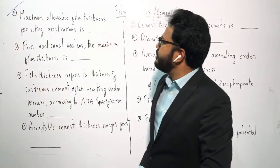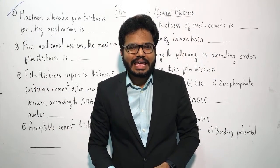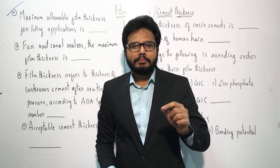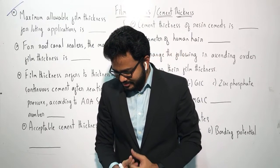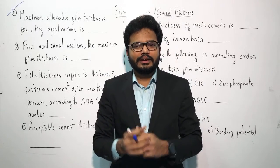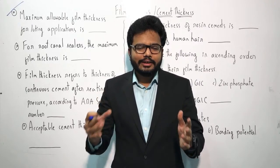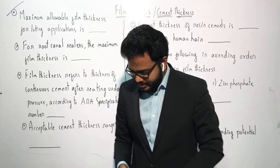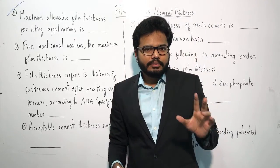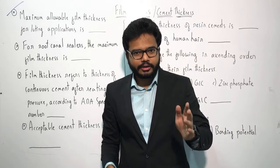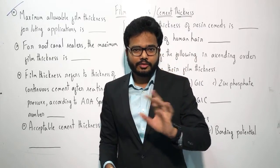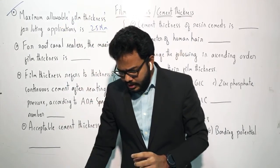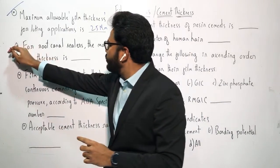First question: what is the maximum allowable film thickness for luting applications? The maximum allowable film thickness for luting applications is 25 microns. Remember, we're talking about film thickness, not cement thickness. So note down 25 microns.